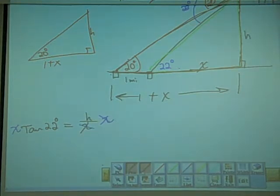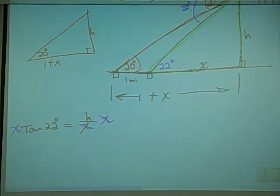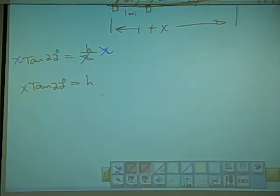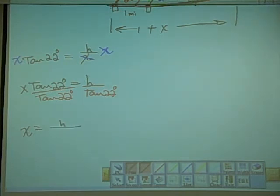And we get x times tangent 22 degrees equals to h. So if we were to divide both sides by tangent 22 degrees, we could get x is equal to h over tangent 22 degrees.